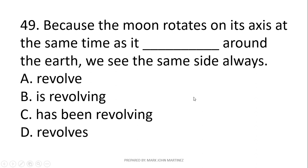Question 49: Because the moon rotates on its axis at the same time as it blank around the earth, we see the same side always. The moon here is singular, so the verb should also be singular. The correct answer is 'revolves' — because the moon rotates on its axis at the same time as it revolves around the earth, we see the same side always.